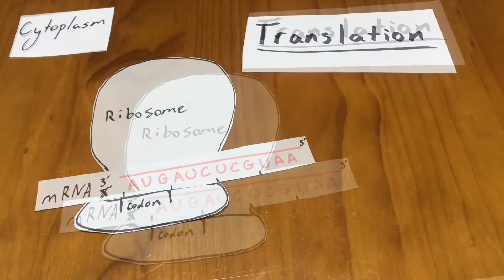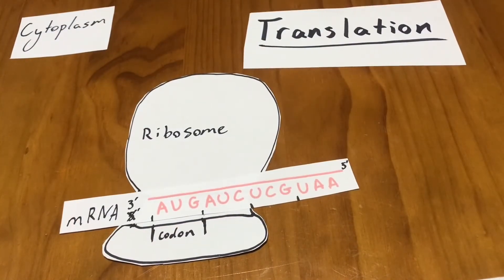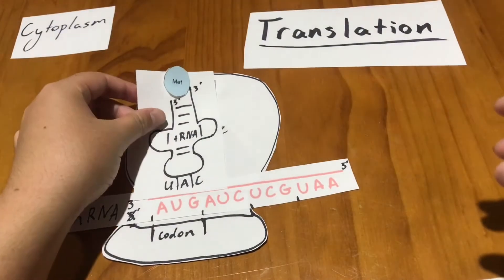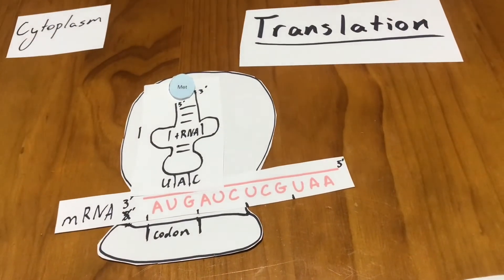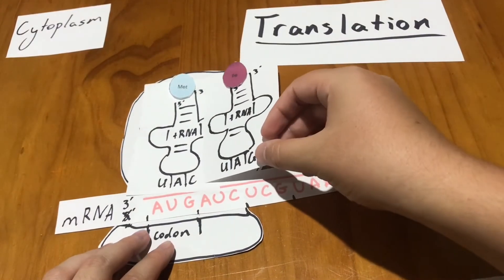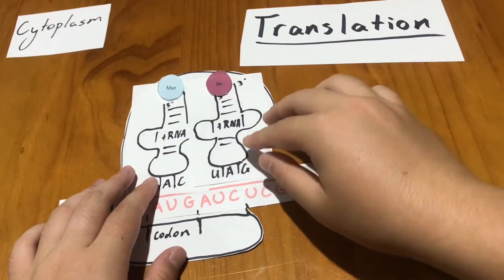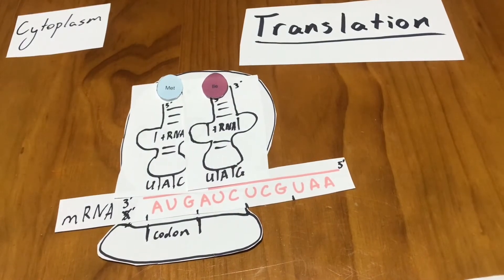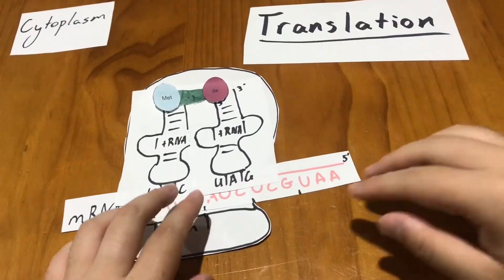The ribosome within the cytoplasm reads the mRNA code three bases at a time called codons, then as the complementary anticodon found at one end of the tRNA. These codons provide the information that determines the corresponding amino acid at the other end of the tRNA which carries that related amino acid.